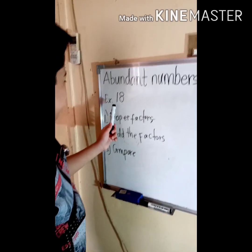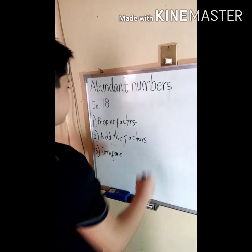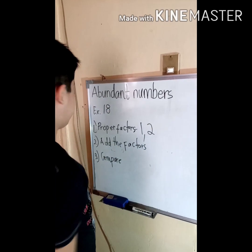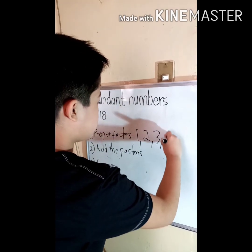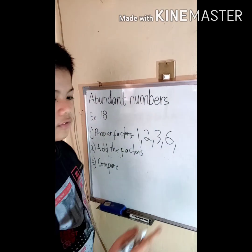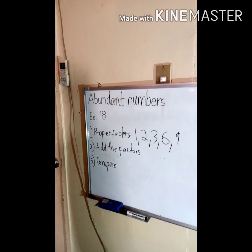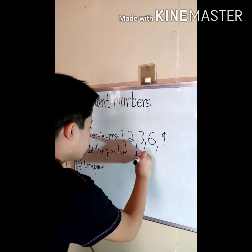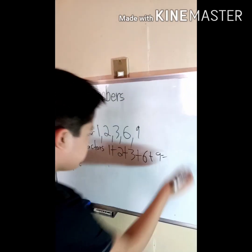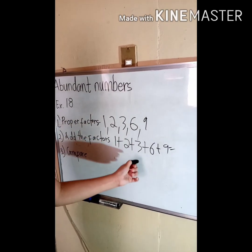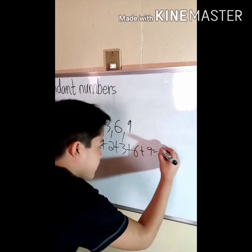Let's have another example. Number 18 is the given example. Let's find the proper factors of 18. The proper factors of 18 are 1, 2, 3, 6, and 9. Now we need to add all of them: 1 plus 2 plus 3 plus 6 plus 9 equals 21. So the sum of the proper factors is 21.